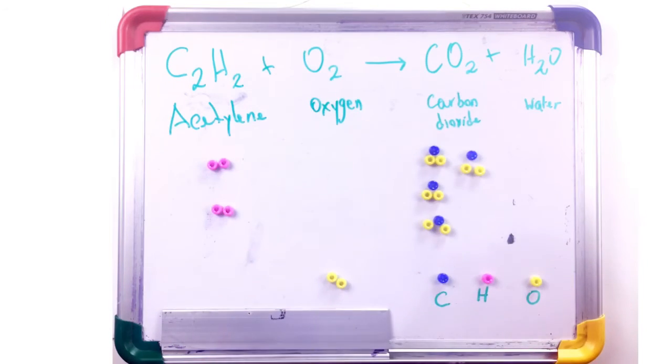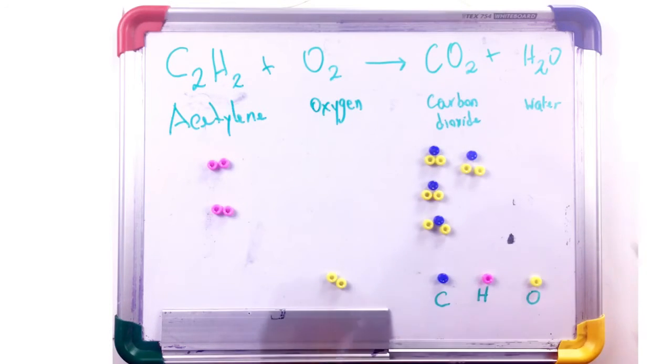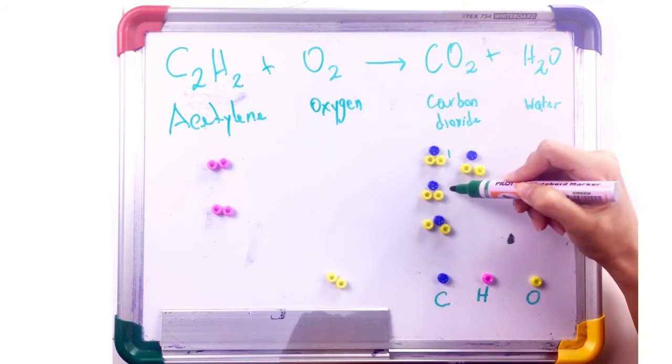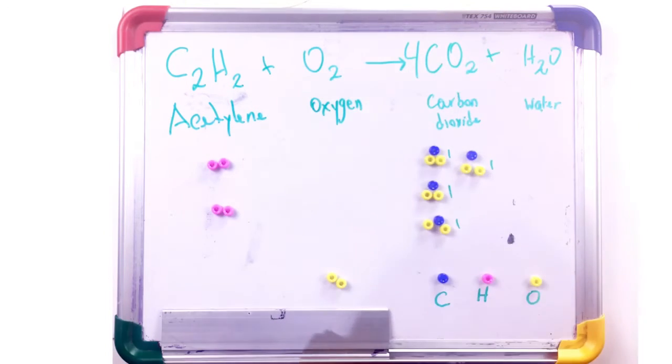So in this compound for carbon dioxide, CO2, we see that we were able to make one, two, three, four. So we place a coefficient, number four, in front of our compound.